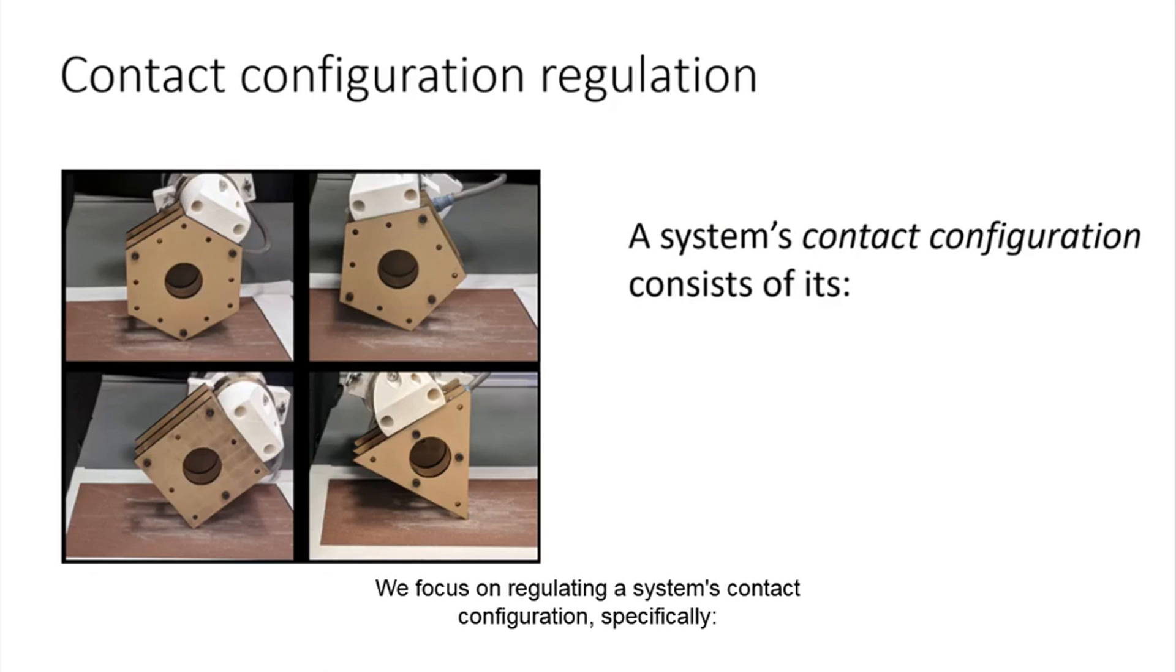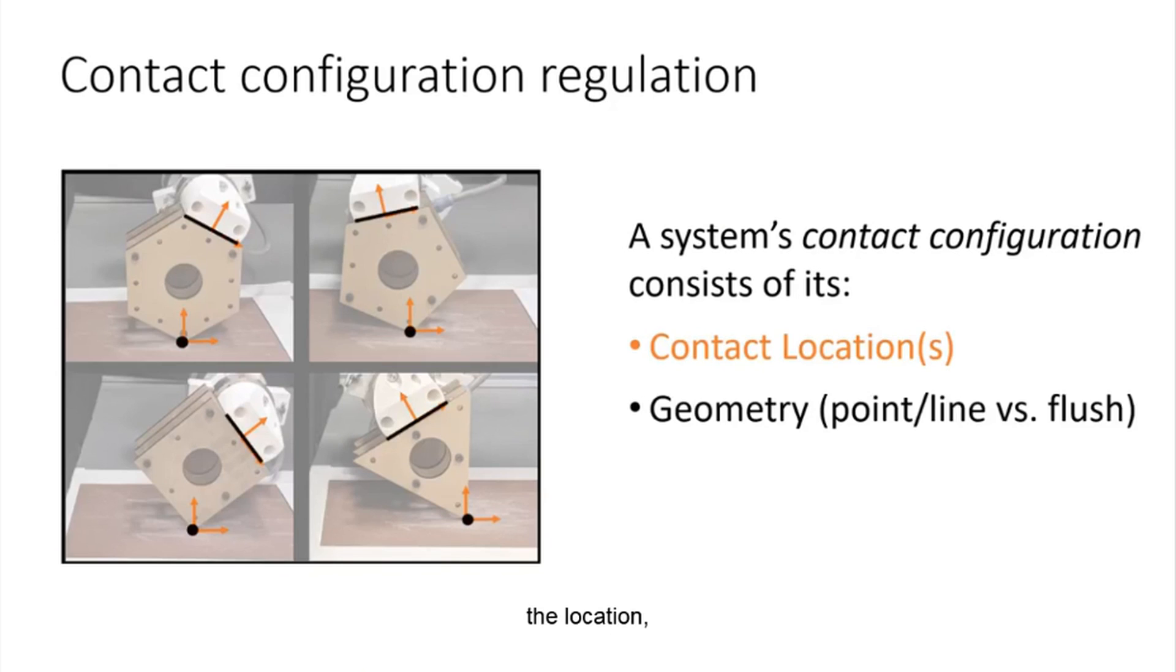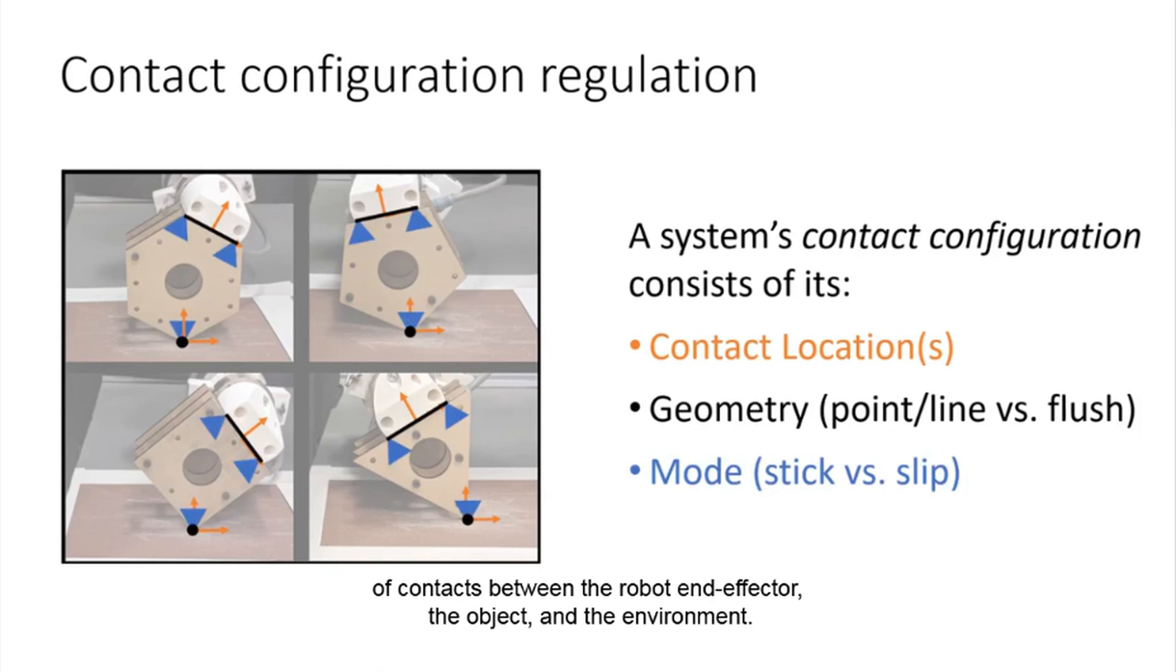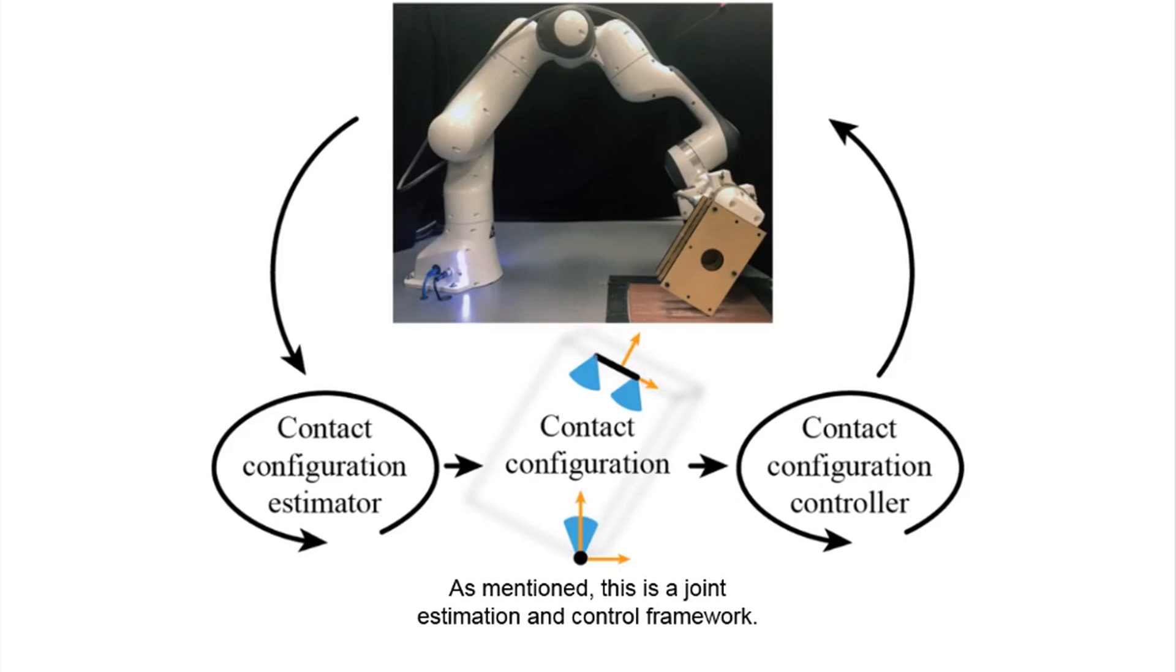We focus on regulating a system's contact configuration, specifically the location, geometry, and the mode of contacts between the robot end effector, the object, and the environment. As mentioned, this is a Joint Estimation and Control Framework.